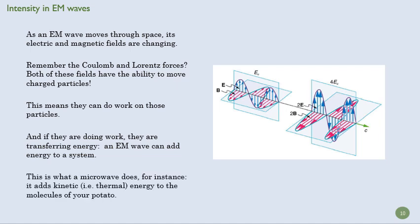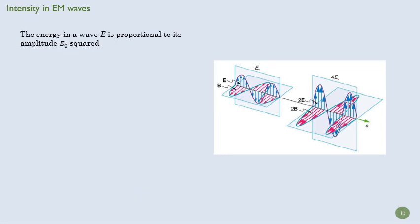And an example of that is that a microwave can add kinetic energy to the molecules of your potato. So you send a bunch of microwaves through that potato. It starts to vibrate the molecules of that potato. And that adds kinetic energy to those molecules. And we know that the kinetic energy of molecules is a measure of temperature. And so the temperature of the potato goes up and its thermal energy goes up. So that's a useful thing.